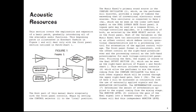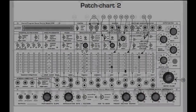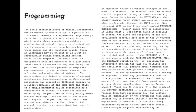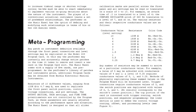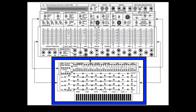It's broken into three sections. The first section is Acoustic Resources and covers Patch Charts 1 through 4. The second section is Programming, Patch Charts 5 through 17. And finally, the third section, Metaprogramming, which looks at using the program card and soldering up your own custom patches, is Patch Charts 18 through 21.